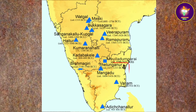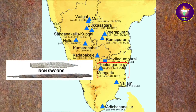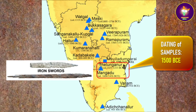Before the latest discovery, the earliest evidence of iron use for Tamil Nadu was from Telunganur and Mangadu near Mettur in the iron-bearing zone of Salem, dating back to 1500 BCE.